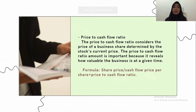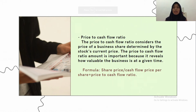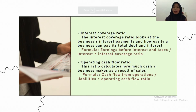The next is the price to cash flow ratio. This ratio considers the price of a business's shares as determined by the stock's current price. This ratio is important because it reveals how valuable the business is at a given time. A lower price to cash flow is ideal, demonstrating that share value will most likely increase. This also means that although the stock price is not high, the business can support itself with current cash flow. The formula is: share price divided by cash flow per share.